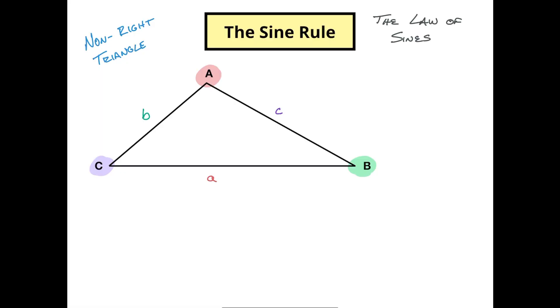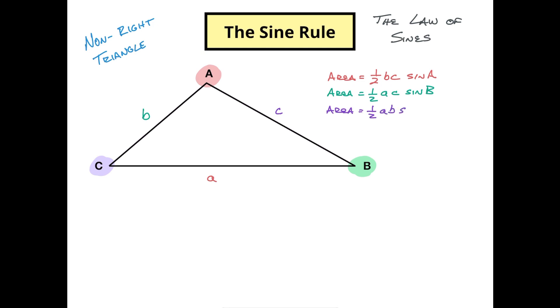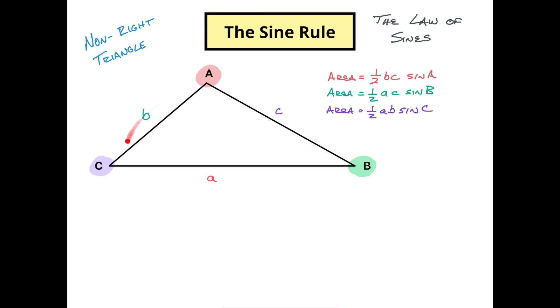The area of a non-right triangle can actually be written three different ways. One way is one-half BC sine A. Another way is one-half AC sine B. And the last way is one-half AB sine C. Since all three expressions represent the same area, the area is not going to change, meaning this area equals this area equals this area. I'm going to take two of these to start.